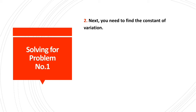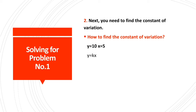Next, we need to find k, or the constant of variation. In order to find k, we need to substitute the first values into the equation y equals kx. Our first values are y equals 10 and x equals 5. The equation will be 10 equals k times 5, which becomes 10 equals 5k. We need to eliminate 5 from 5k, so we divide both sides by 5. Now, k equals 2.